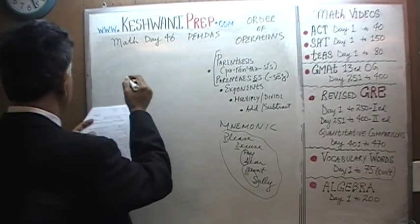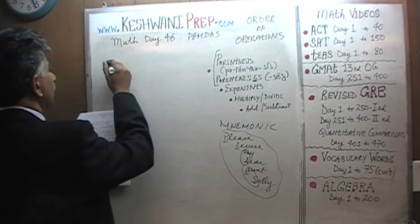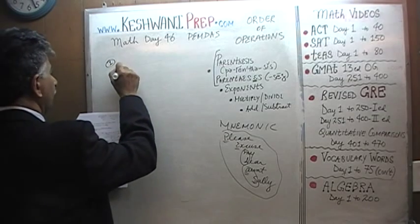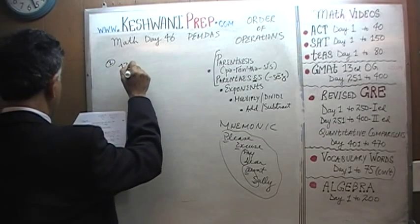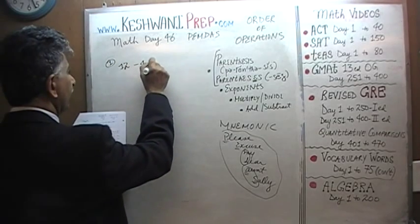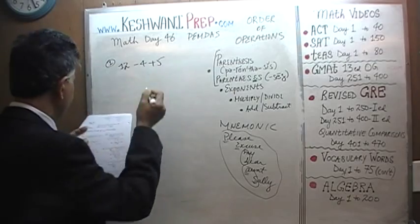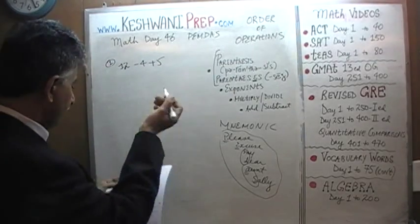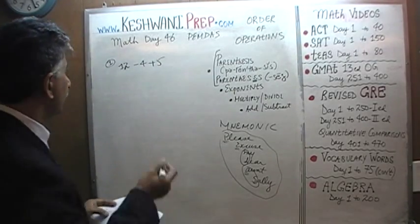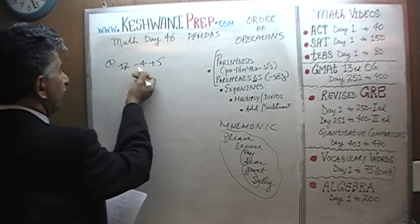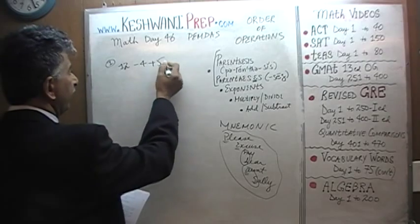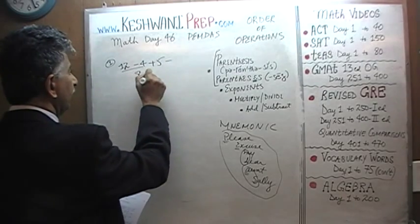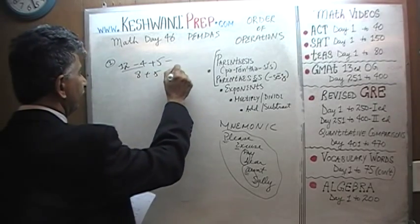Here is the first one: 12 minus 4 plus 5. This is very straightforward addition and subtraction. It doesn't matter which order we do it. 12 minus 4 is 8, and 8 plus 5 is 13.